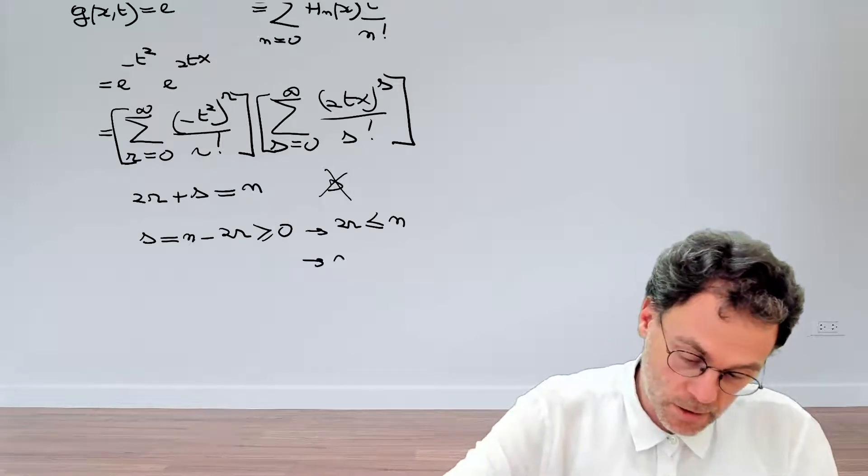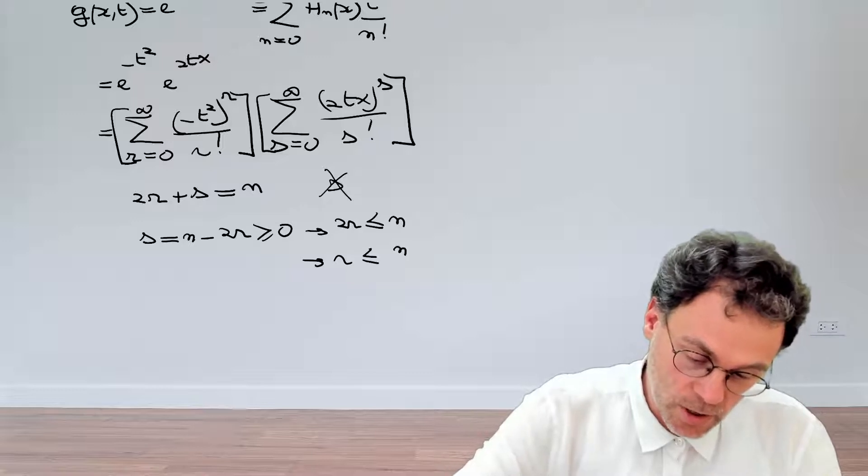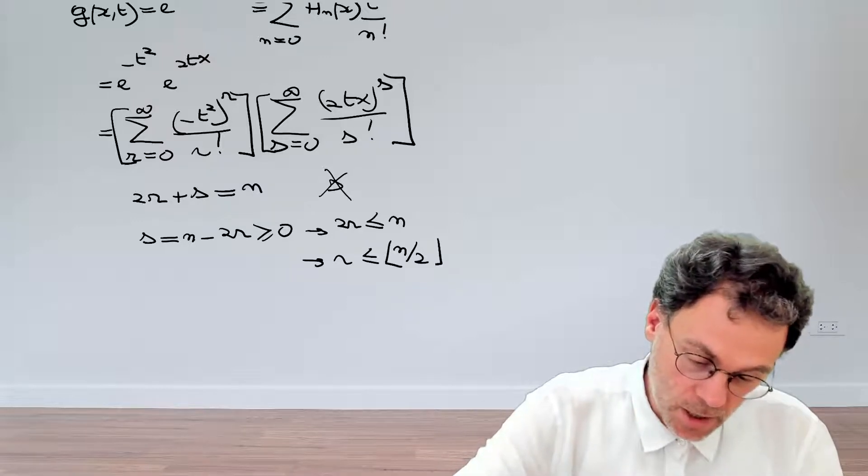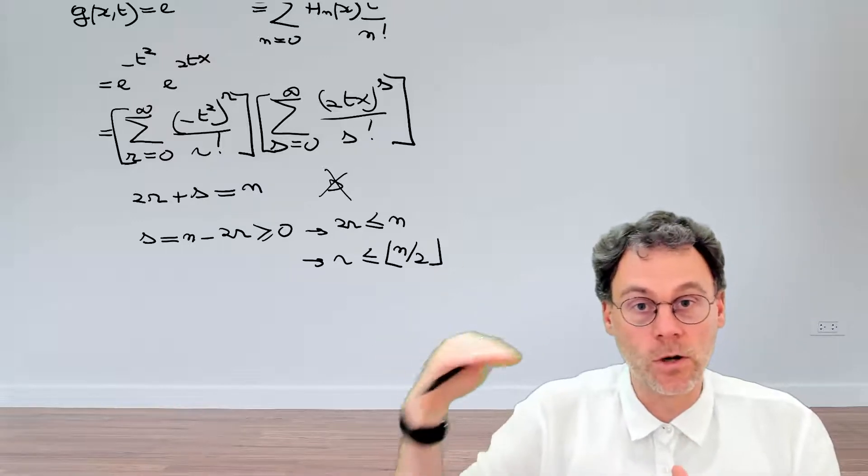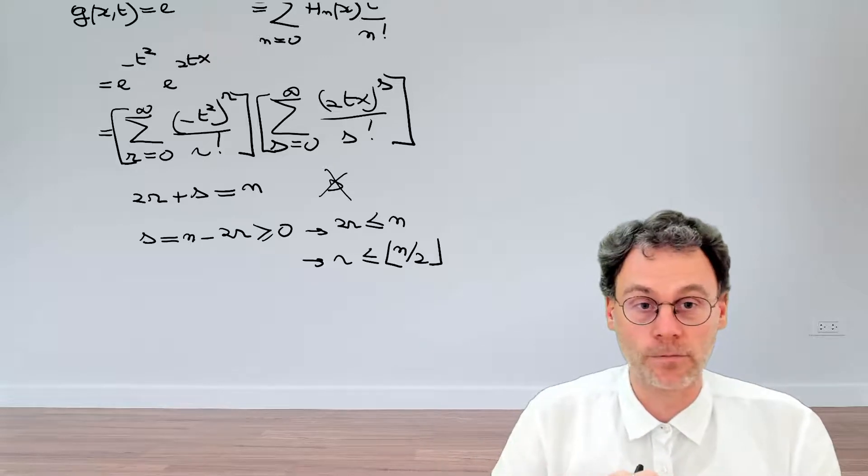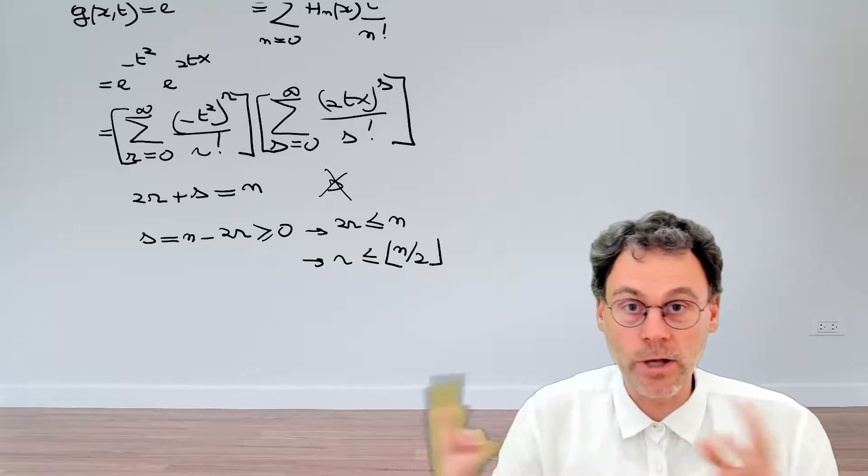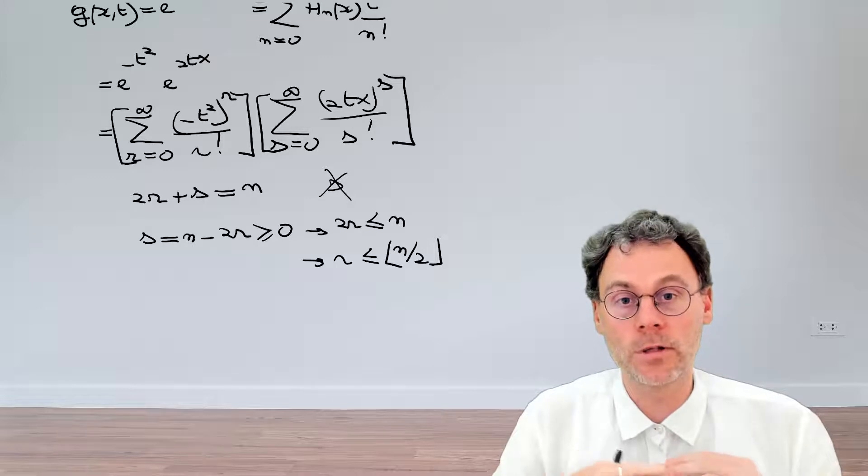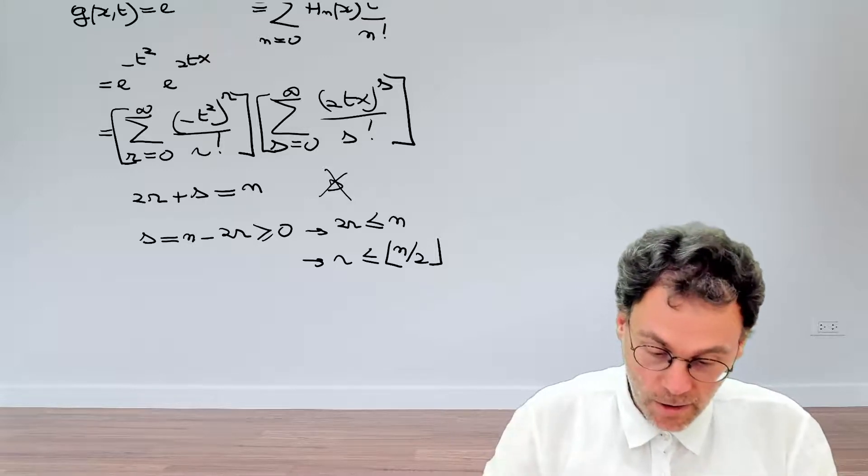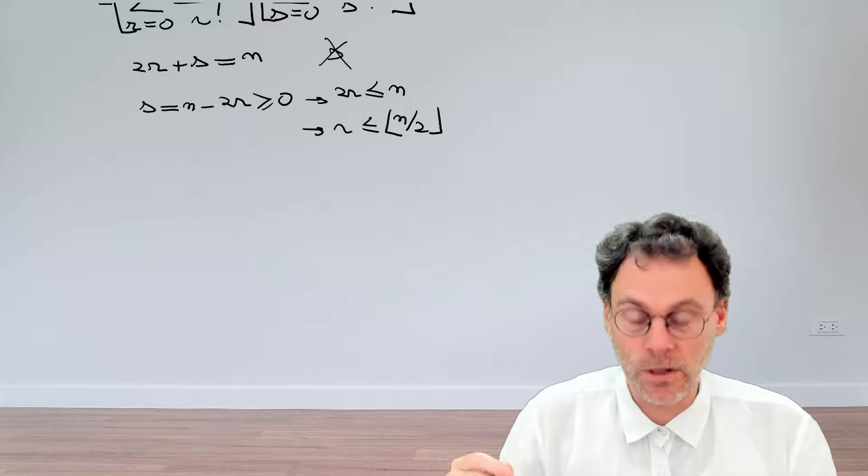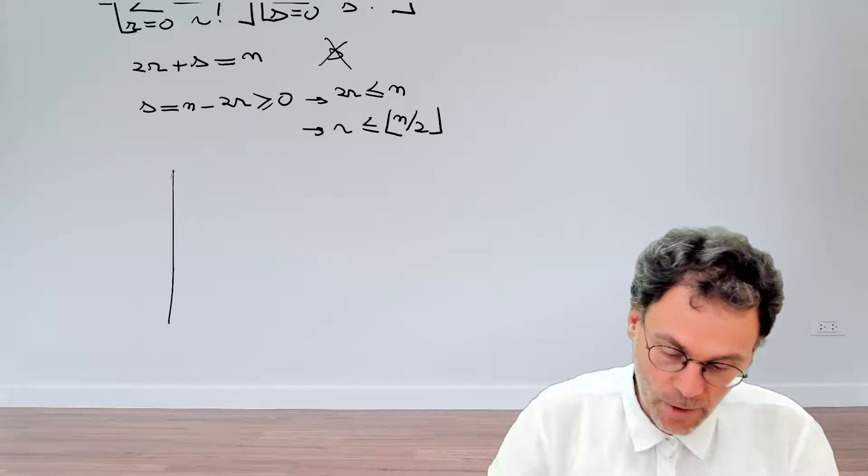Or we can also write that r is equal to this particular quantity, which is the integer just below or equal to n over 2. So that's a purely algebraic way of coming up with the new bounds. There's another way of doing that, which is slightly more instructive, I think, which is based on a diagram like this.